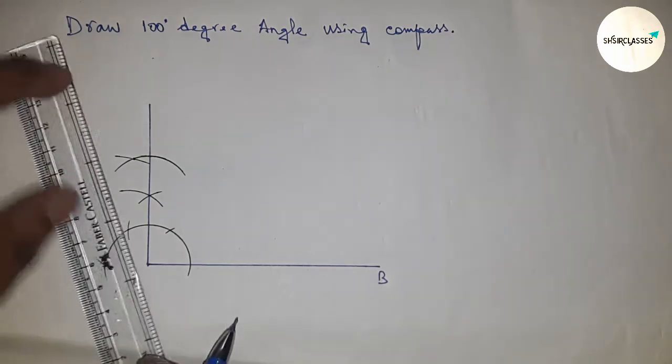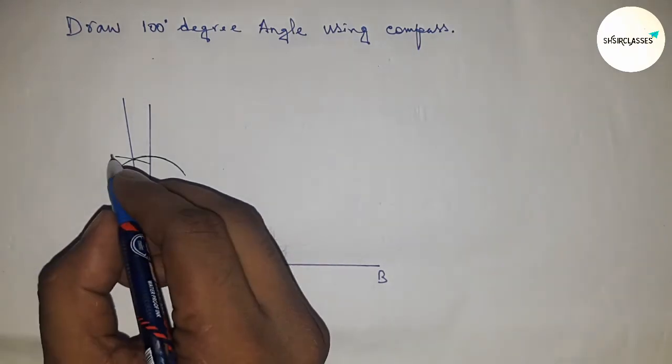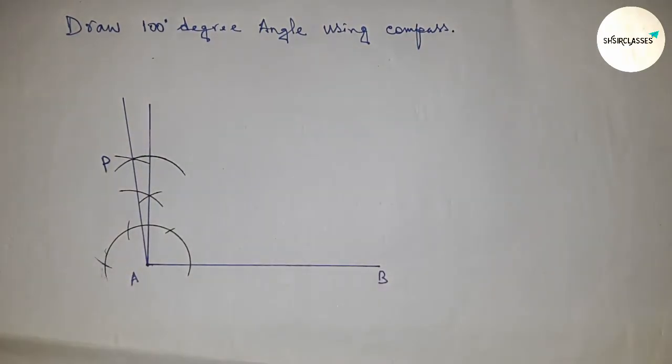Okay, and this is the intersecting point. Next, joining this to get 100 degree angle.